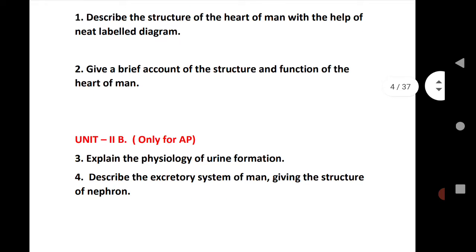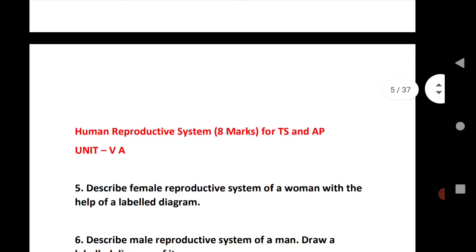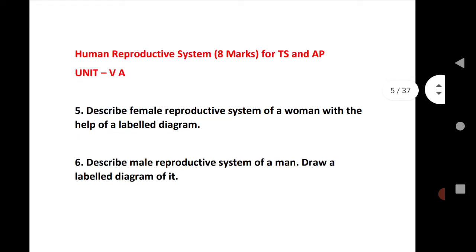Unit 2B is only for AP students — explaining the physiology of urine formation, describing the excretory system of man, and giving the structure of the neuron.